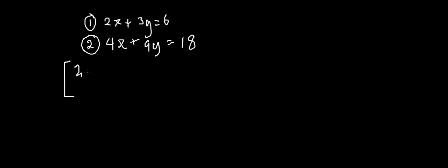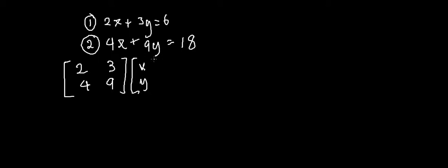So it looks like this: the coefficient matrix is 2, 3, 4, 9 — multiplied by the variable matrix x, y — equals the constants matrix 6, 18. Basically we've just put the coefficients 2, 3, 4, 9 into this matrix, with x and y as variables, and our constants 6 and 18 on the right.